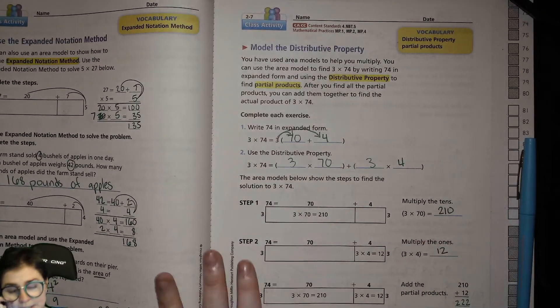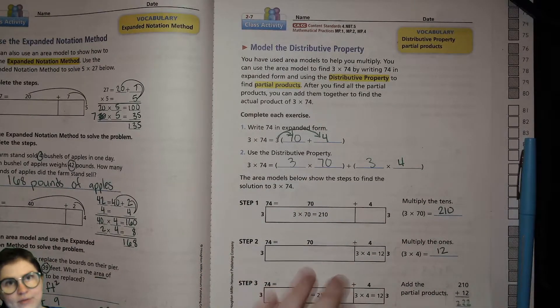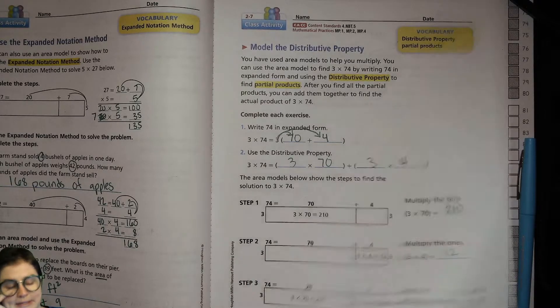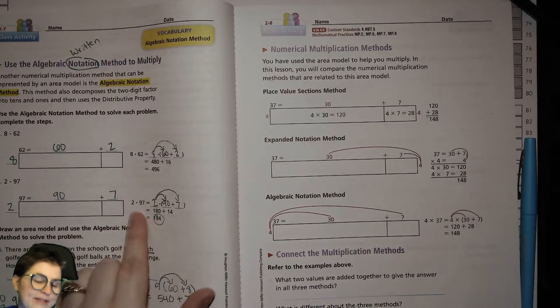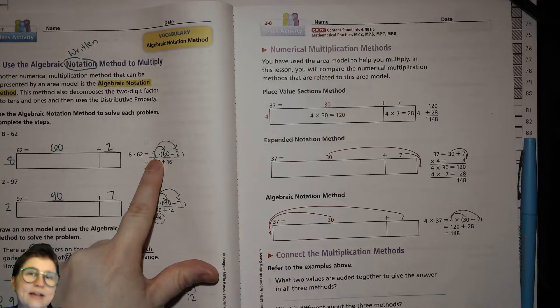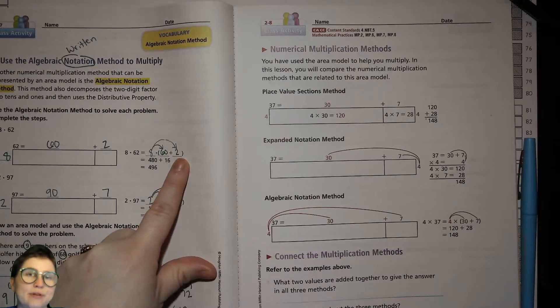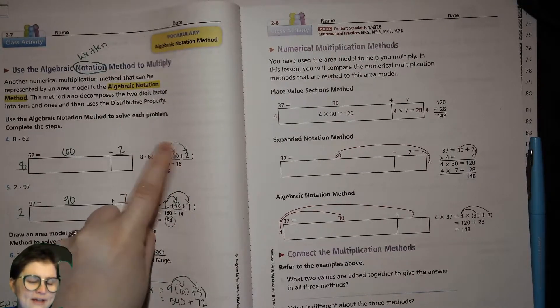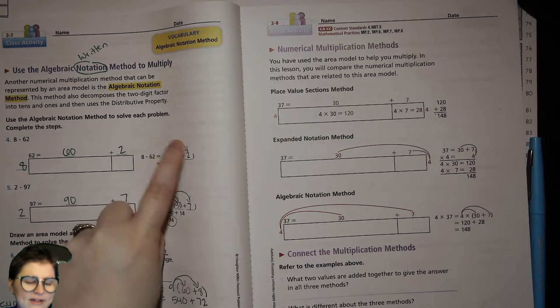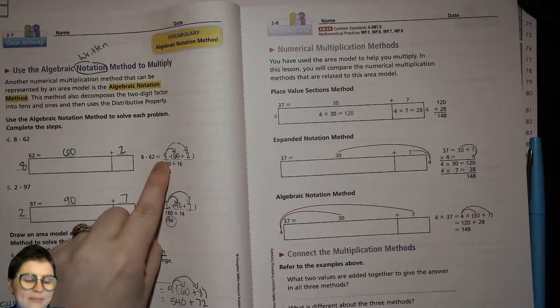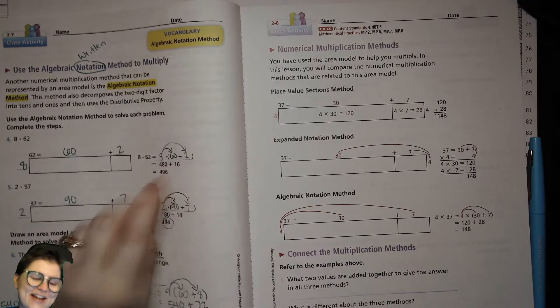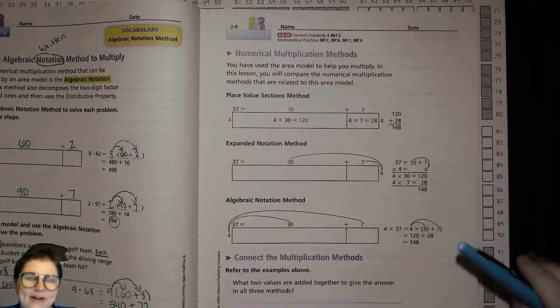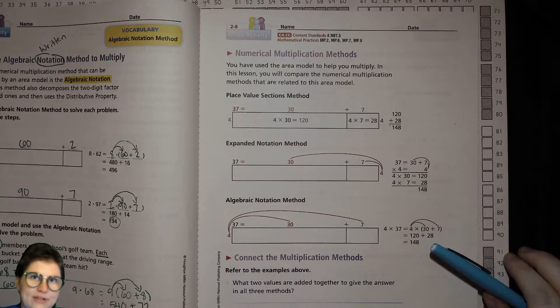The distributive property is talking about giving something to everybody, right, passing things out, making sure everybody gets what they need. You use that when you're doing the algebraic notation method, which is setting up one factor next to a parentheses that has the expanded form of the other factor, then multiplying each of those pieces by that first factor and adding up those partial products. They're basically just different ways to approach the same idea.